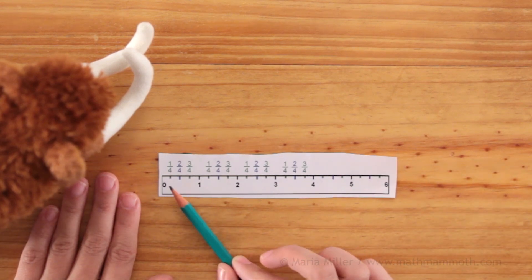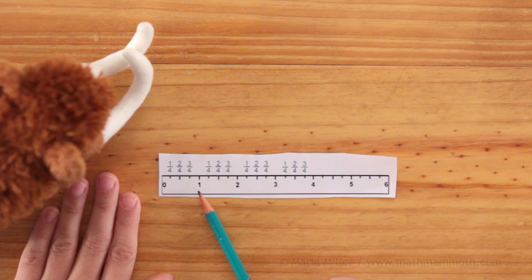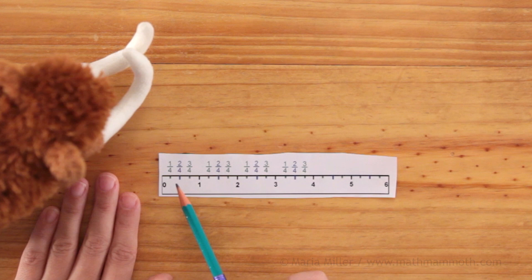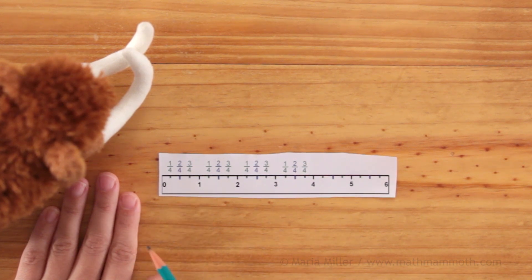And here on my paper you see a ruler and then there are these whole inch marks: 0, 1, 2, 3, 4, 5, 6, those are for the whole inches. And then there's little marks, these green and blue little marks, and these divide the whole inch into four parts.